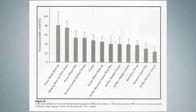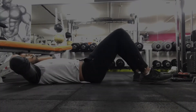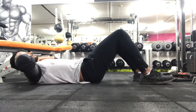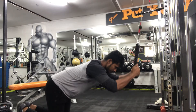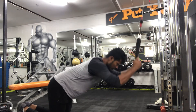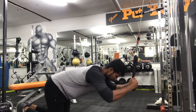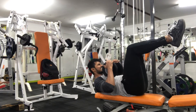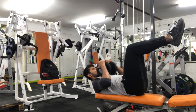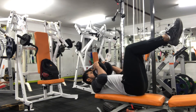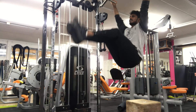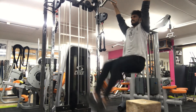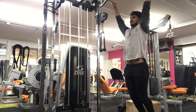Crunches and sit-up variations are generally good, which makes sense given that the primary function of the rectus abdominis is to flex the spine. Variations like cable rope crunches and weighted crunches have shown in literature to elicit high ab activation. According to the data, it is also clear that the lower abdominis is more activated while performing hanging movements.